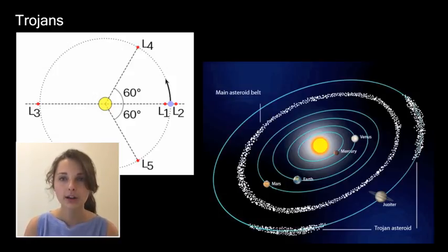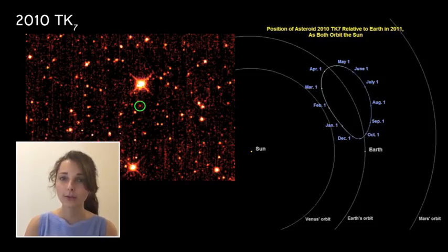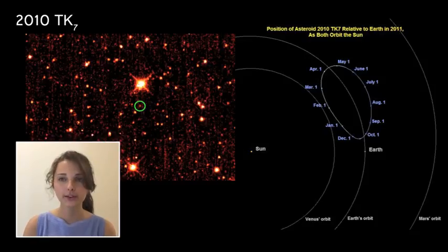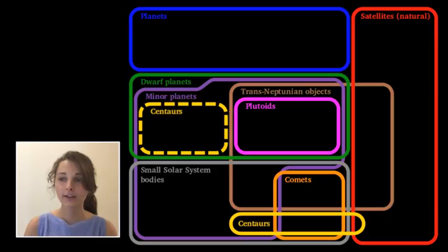Around Jupiter, these objects are grouped into the Greek camp, located at L4, in front of Jupiter, and the Trojan camp, located at L5, trailing Jupiter. The discovery of the first Earth Trojan, 2010 TK7, was announced by NASA in 2011, orbiting at L4, 60 degrees ahead of Earth. This diagram may be helpful in better understanding the relationships between different types of bodies in the solar system and their classifications.